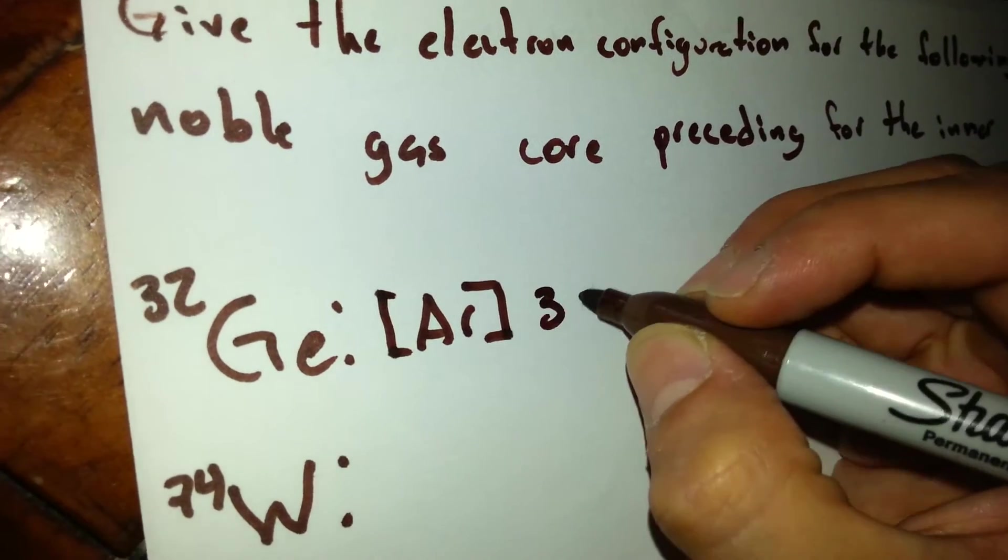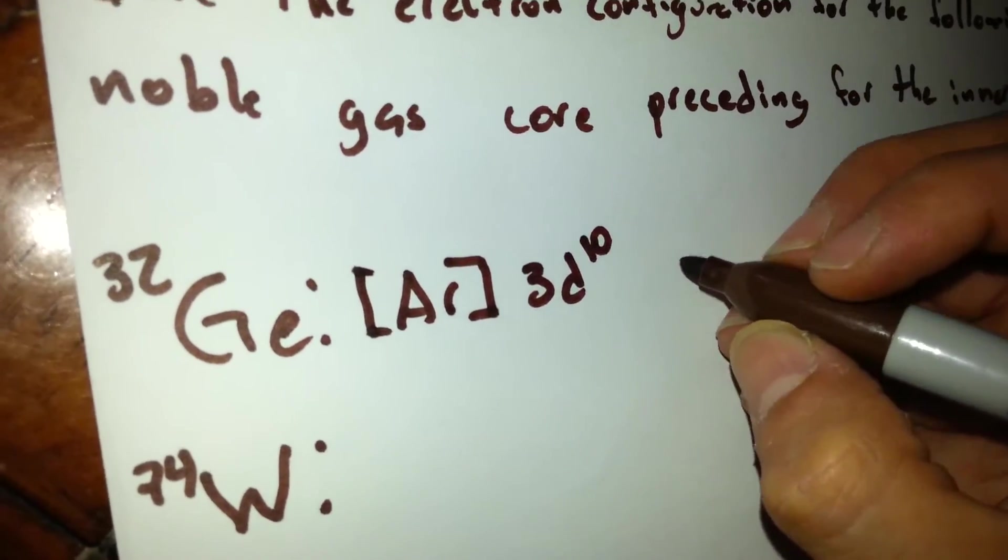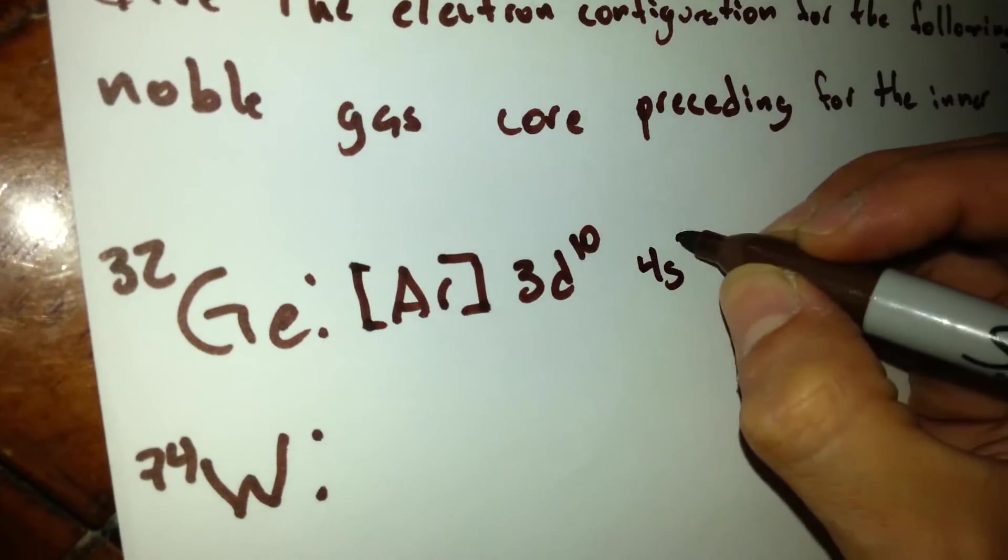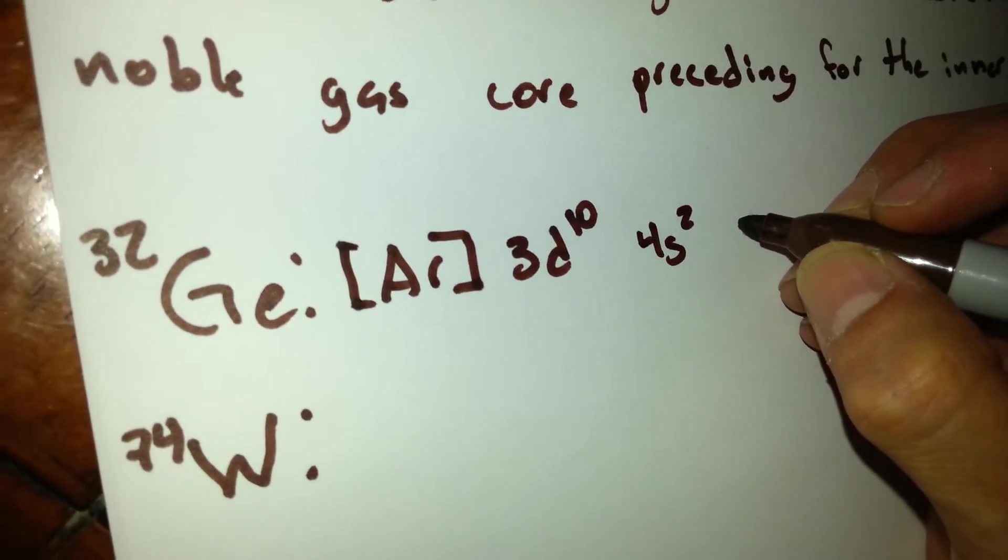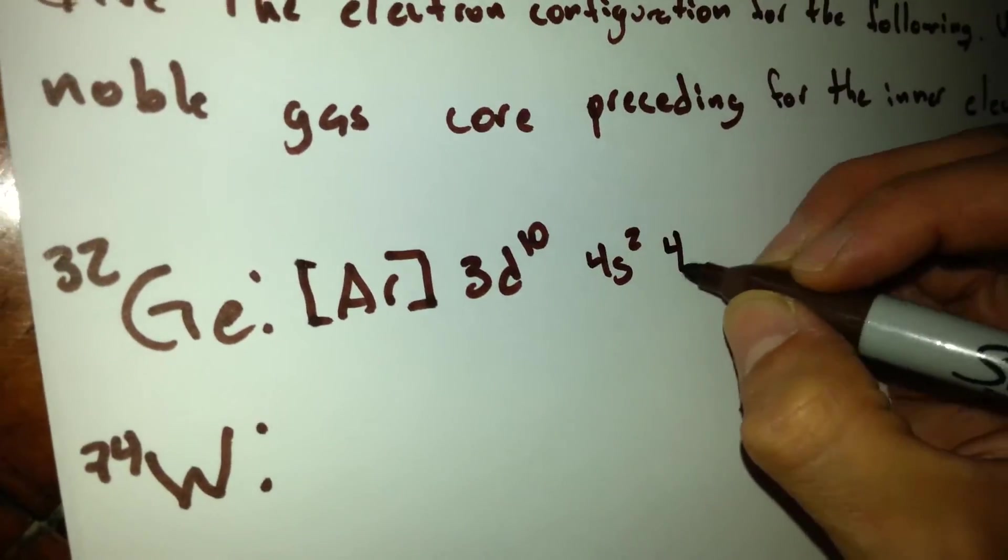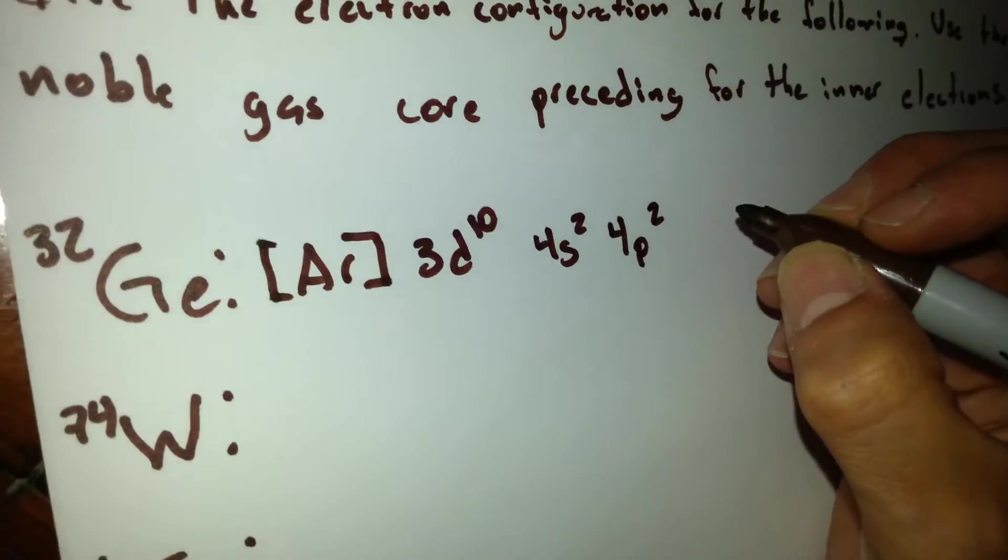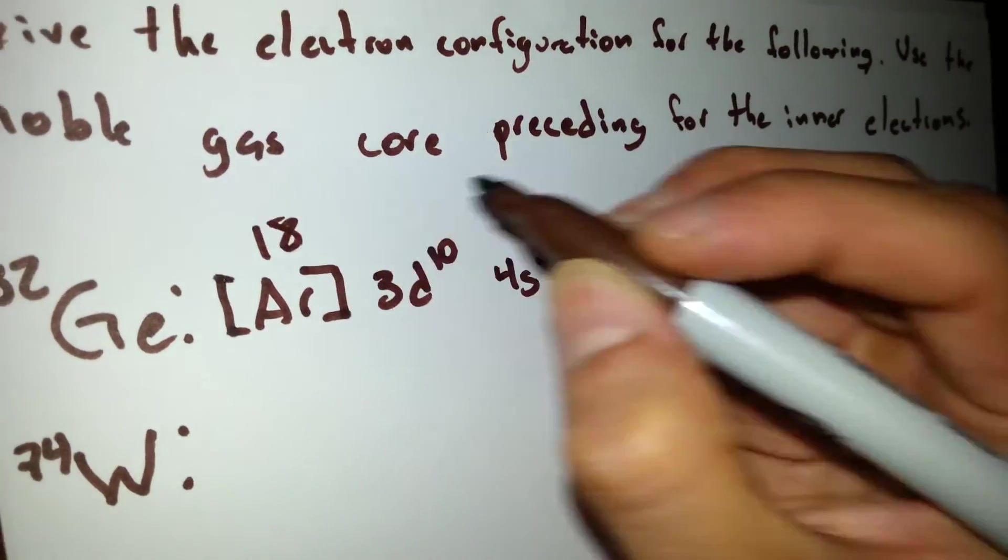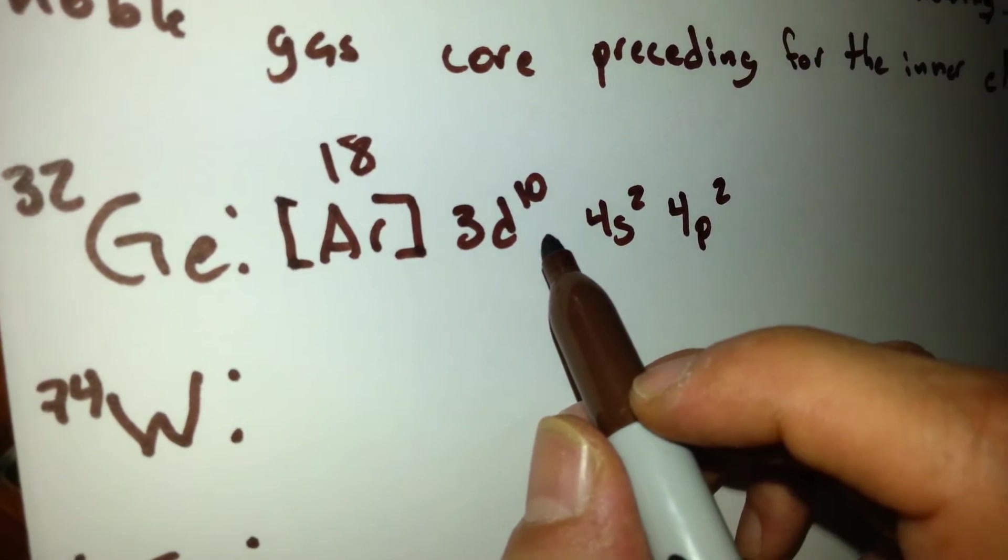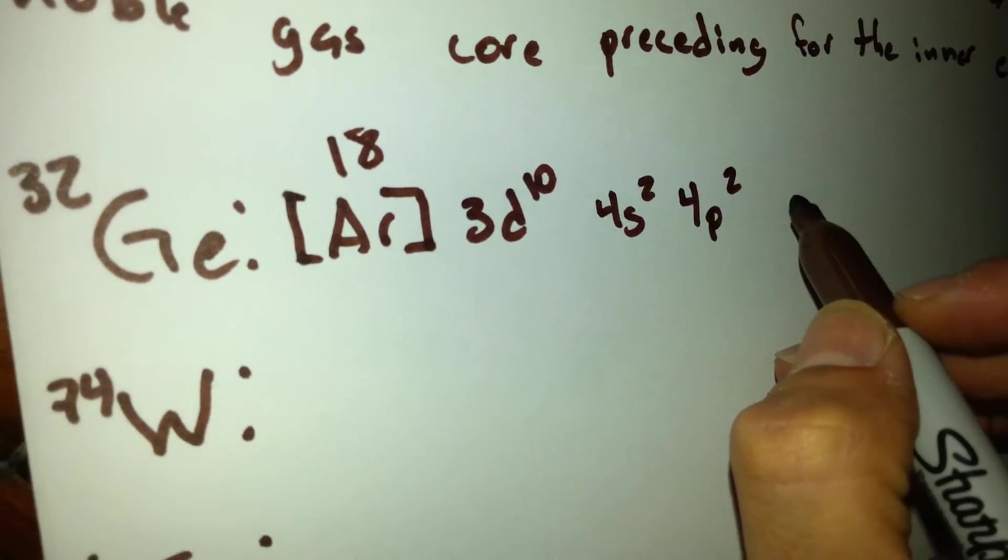we do the 3d orbital full with 10, the 4s orbital full with 2, and the 4p orbital with 2. Argon has a total of 18, plus 10, 28, 30, 32.